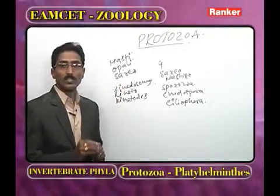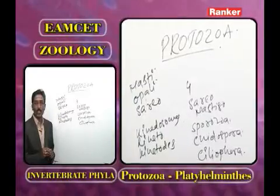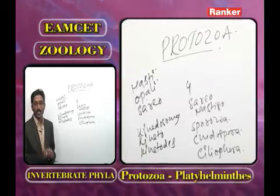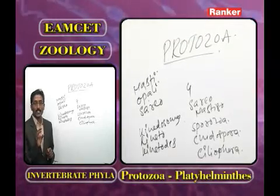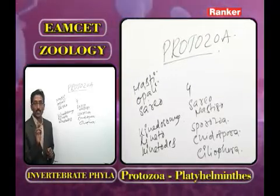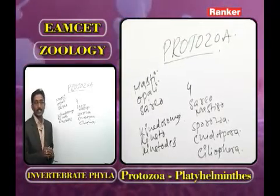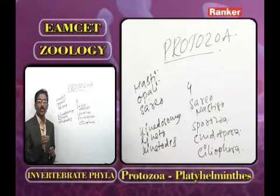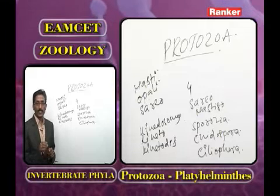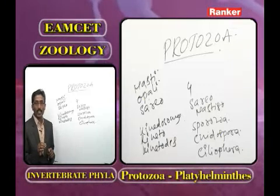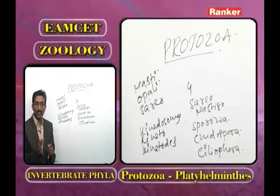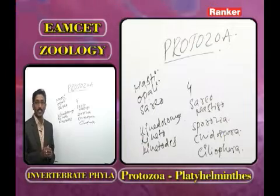The third superclass is Sarcodina, classified into three classes: Rhizopodea, Actinopodea, and Piroplasmia. In Rhizopodea, animals include amoebas, foraminiferans, and mycetozoa.